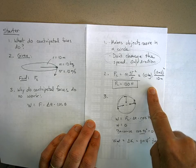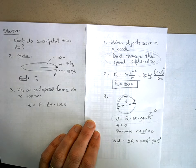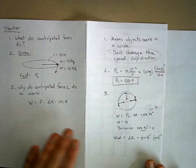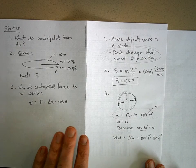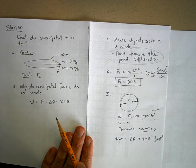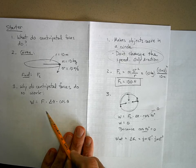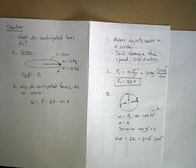Alright, now number three, why do centripetal forces do no work? Well, this is the equation for work. Work is done when the force and displacement have components that are in the same direction. That's what that cosine theta does for you.